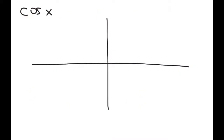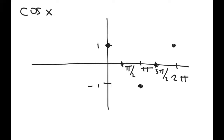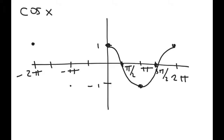Now let's talk about the cosine of x. Cosine of x also has a period of 2pi and starts and stops its period at the maximum. Halfway in the middle, at 1pi, it hits its minimum. At pi over 2 and 3pi over 2 is when it hits the x-axis. This is what one period of the cosine curve looks like. Expanding in the negative direction, it'll start and stop at its maximum, hit its minimum at negative 1pi, and hit the x-axis at negative pi over 2 and negative 3pi over 2.